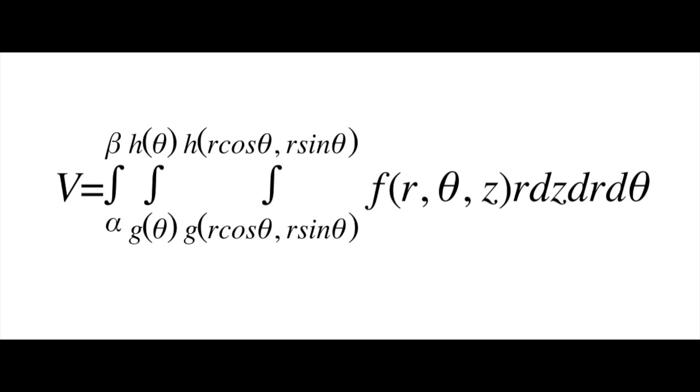R equals H theta will always be the upper bound, and R equals G of theta will always be the lower bound of the middle integral with respect to R. Also, the outer integral will have the bounds of the surface with respect to theta from alpha to beta.